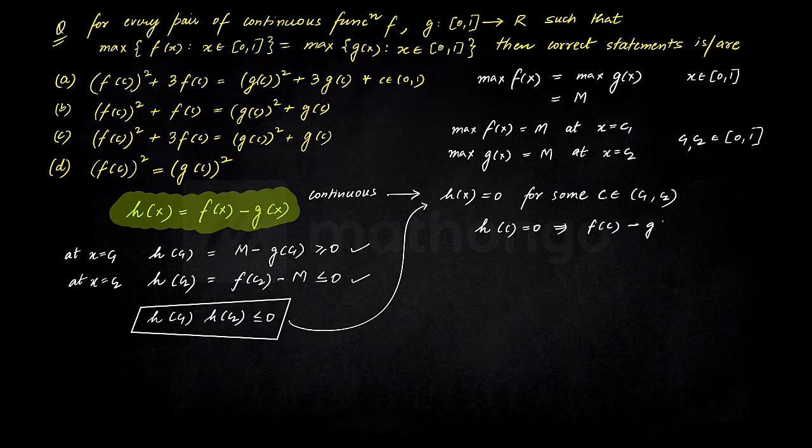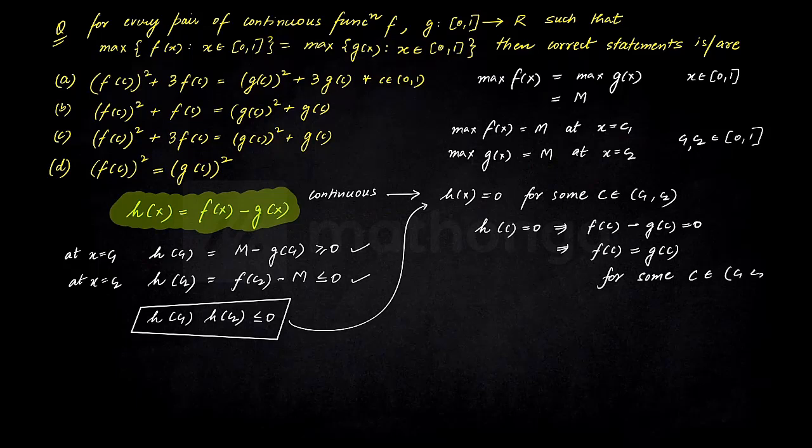f(c) minus g(c) is equal to 0 for some value of c lying between. So that means f(c) will definitely be equal to g(c) for, abh yahan par samjhayega ek bachche yahan par confuse hote hain. For some c lying between c1 to c2 and which indirectly I can say which is lying between some value of 0 to 1. And I could also say this also, this is not a problem because we do not know what is the exact value of c1 and c2.